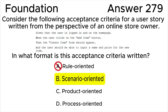Answer A is incorrect. The rule oriented format includes formats like bullet points, verification lists, or tabulated forms of input-output mappings, explicitly showing the rules to be followed. Given-When-Then is a scenario oriented format because it describes a scenario to be verified.